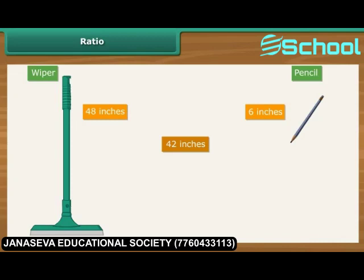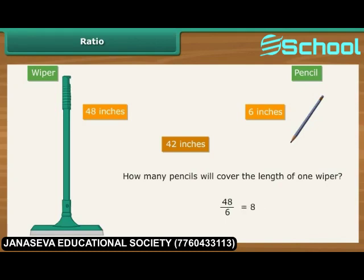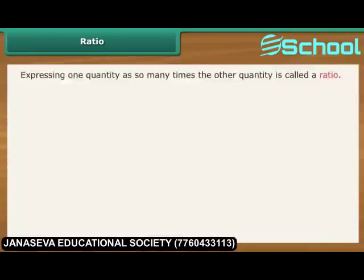How else do we express the variation? Let us ask ourselves: how many pencils will cover the length of one wiper? The answer is 48 divided by 6, that is 8. In other words, the wiper is 8 times longer than the pencil. Expressing one quantity as so many times the other quantity is called a ratio. 48 divided by 6 is 8 divided by 1, which can also be written as 8 is to 1. Colon is the symbol used to denote ratio.